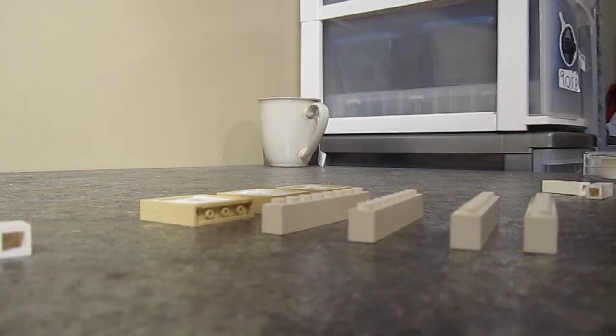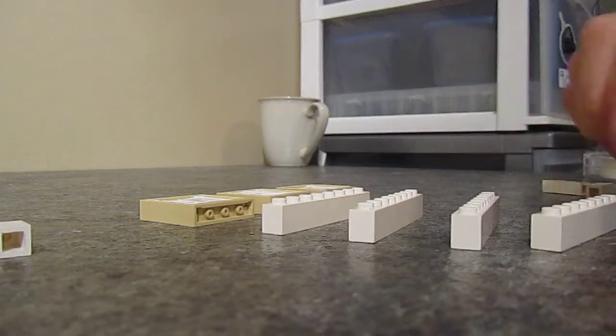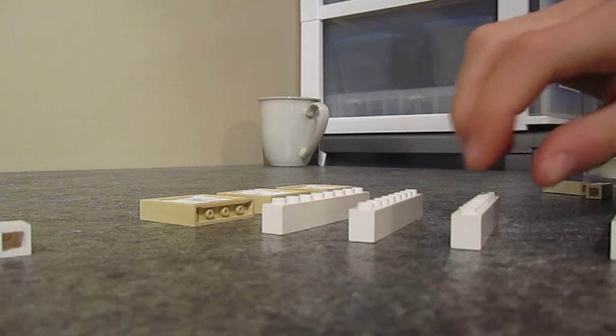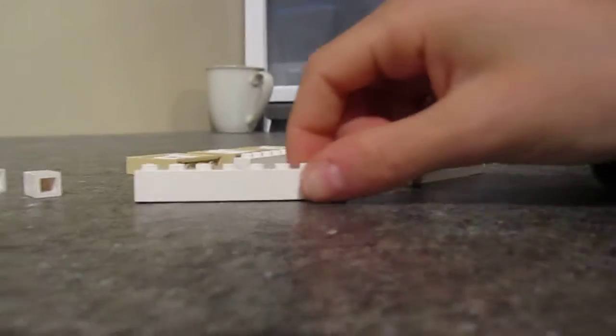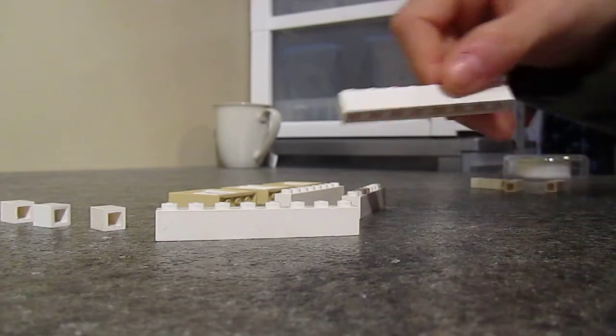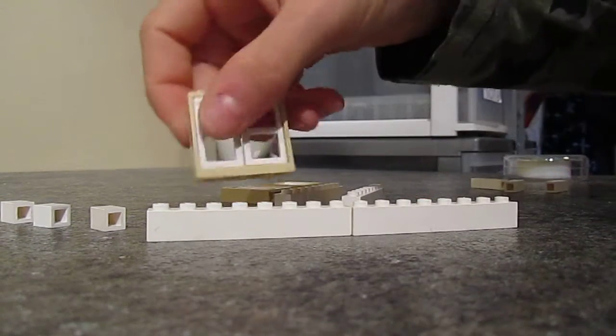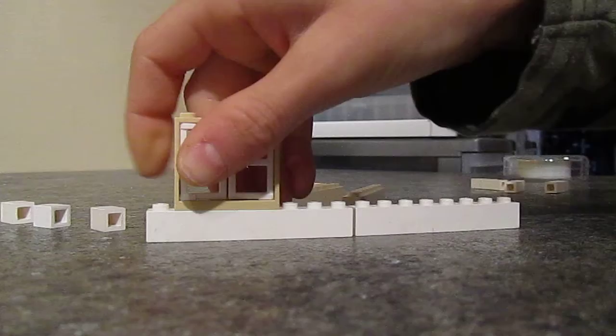Some of you guys were asking how to build a window so it looks nice with the white wall inside and the tan wall. So you start off with one by eight, another one, and you just put the windows.